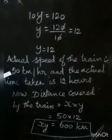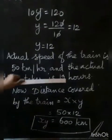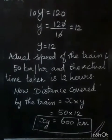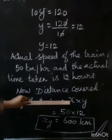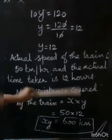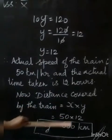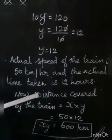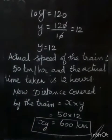Therefore, the actual speed of the train is 50 km per hour and the actual time taken is 12 hours. Distance equals speed into time: 50 into 12 equals 600 km. Therefore, the distance covered by the train is 600 km.